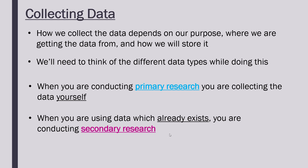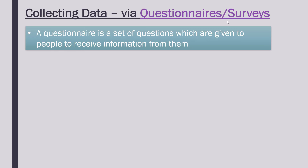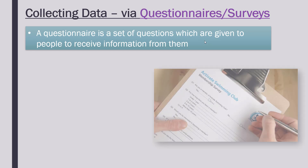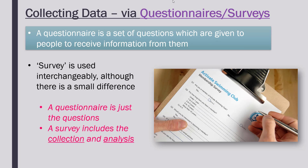Let's look at our first method, which is collecting data via questionnaires or surveys. A questionnaire is a set of questions given to people to receive information from them. We're collecting data via a set of questions, and the person answers them so we can analyse or receive some opinions. When I think of a questionnaire I think of people who stop you in the street and get you to fill in their form.